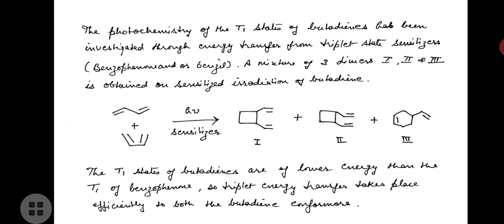The photochemistry of the T1 states of butadiene has been investigated through energy transfer from triplet-state sensitizers — benzophenone or benzyl. A mixture of three dimers (first, second, and third) is obtained on sensitized irradiation of butadiene. As seen in the reaction, trans- and cis-butadiene on irradiation in the presence of sensitizer give the first, second, and third dimers.